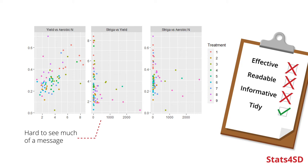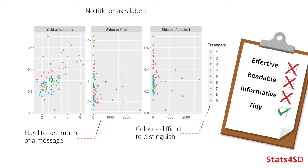That would be a very unsurprising finding and tells us nothing about what would be the key objectives of this analysis, which are about the different treatments. The different colours are not sufficiently distinct, and there are quite a lot of colours to map to the different treatments. There isn't enough information to help us understand where the data comes from or to make this plot a good representation of the data.